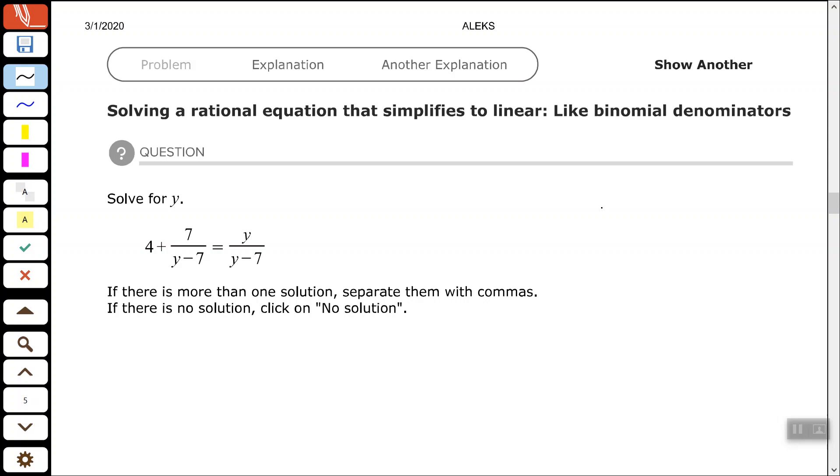So we have, we're solving this equation for y: 4 plus 7 over y minus 7 equals y over y minus 7.